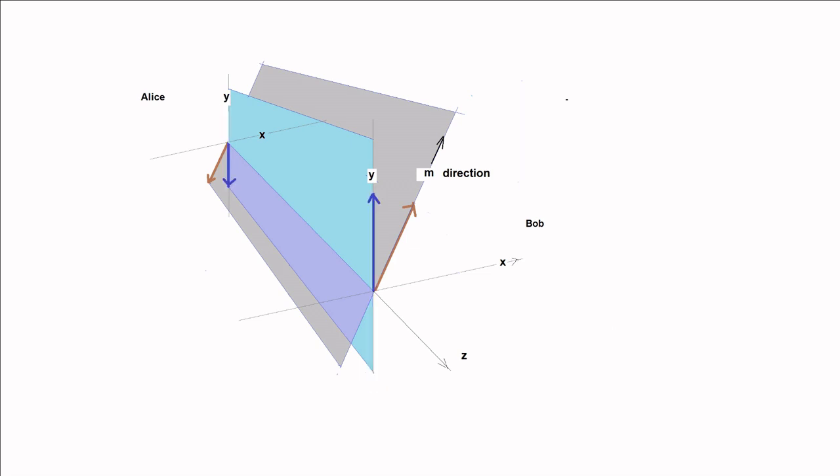And since the total spin is 0, Alice's spin will be minus along y during the same time interval that Bob's is plus along y, and plus along y during the same time interval that Bob's is minus along y.